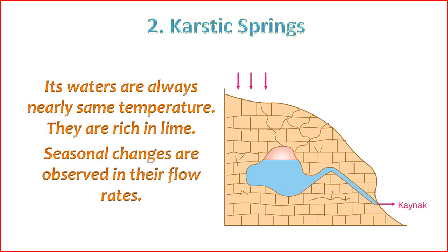The temperature of karstic spring waters remains nearly constant, and they are abundant in lime. Seasonal variations are noticeable in their flow rates.